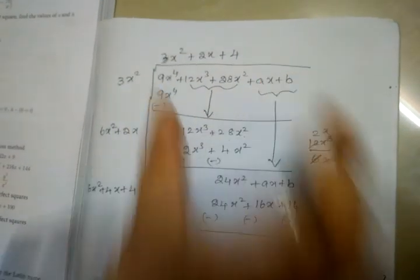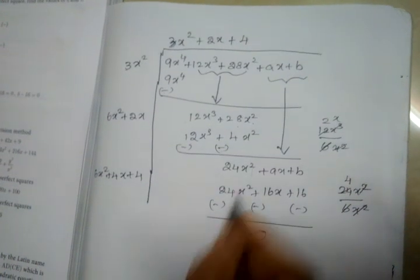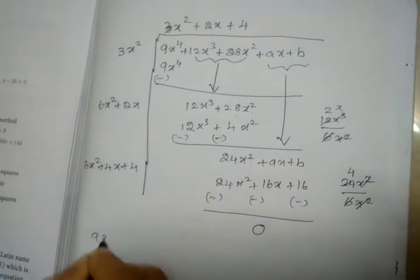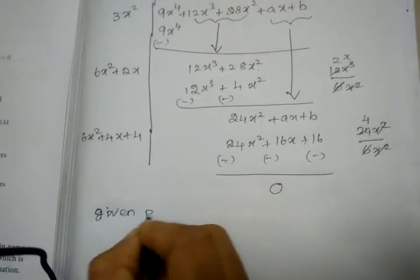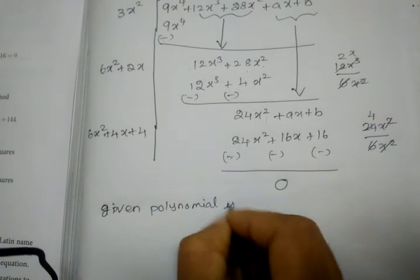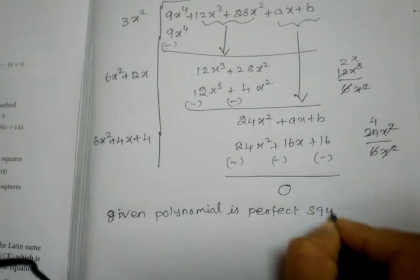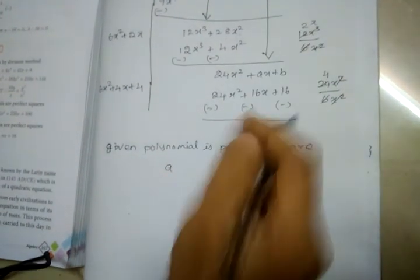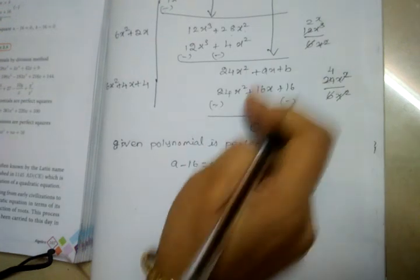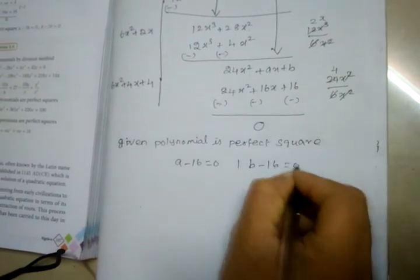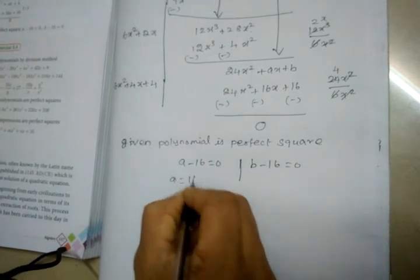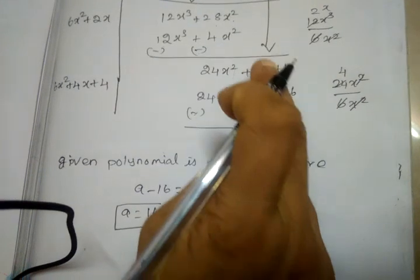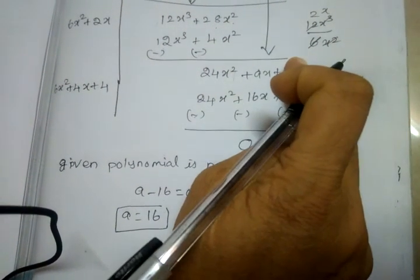This number is a perfect square number — the remainder is zero. Now we can find a and b. The given polynomial is a perfect square, so remainder equals zero. We get: a minus 16 equal to zero, so a equals 16. And b minus 16 equal to zero, so b equals 16.